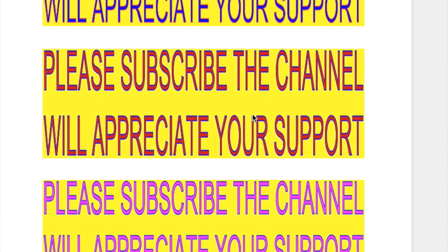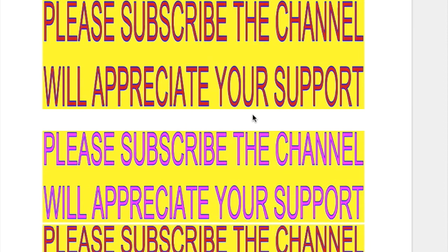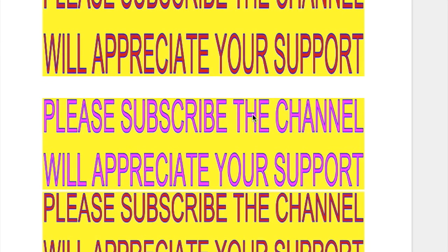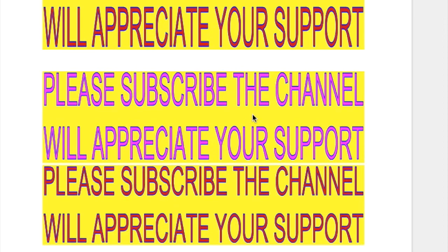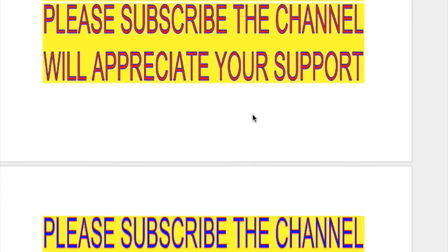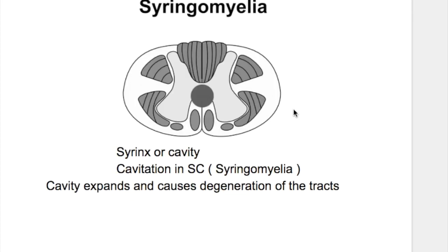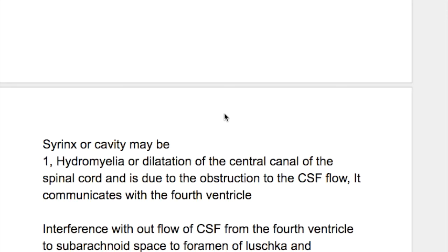In this video we'll discuss syringomyelia — the tracts affected, its causes, and the signs and symptoms produced by syringomyelia. Syringes means cavity. Cavitation in the spinal cord is syringomyelia. The cavity expands and causes degeneration of the tracts.